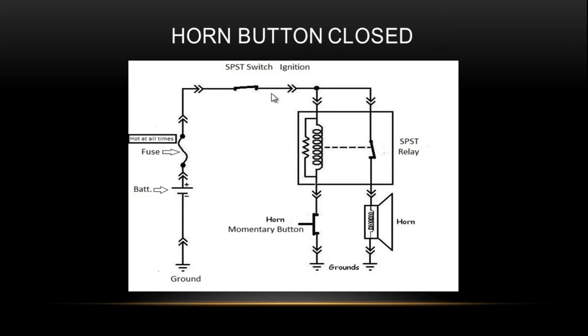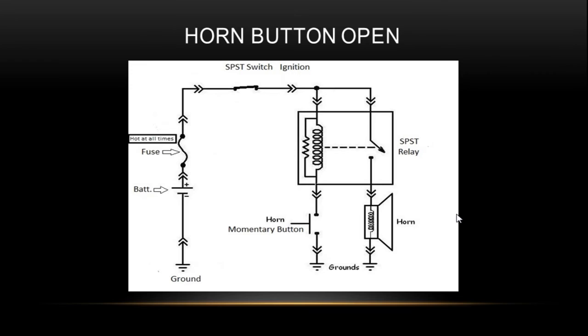In order to make that contact close, for this coil to energize and create a magnetic field, we've got to press the horn button. Now the horn button is closed. The current can flow down through the coil, through the momentary push button contacts to ground, which created a magnetic field and pulled in your contact, and allowed the current to flow down through the contact to your load, which is the horn, and activate the horn. If I release the momentary push button, it opens that contact. Even with the ignition switch on, it deactivated the horn.